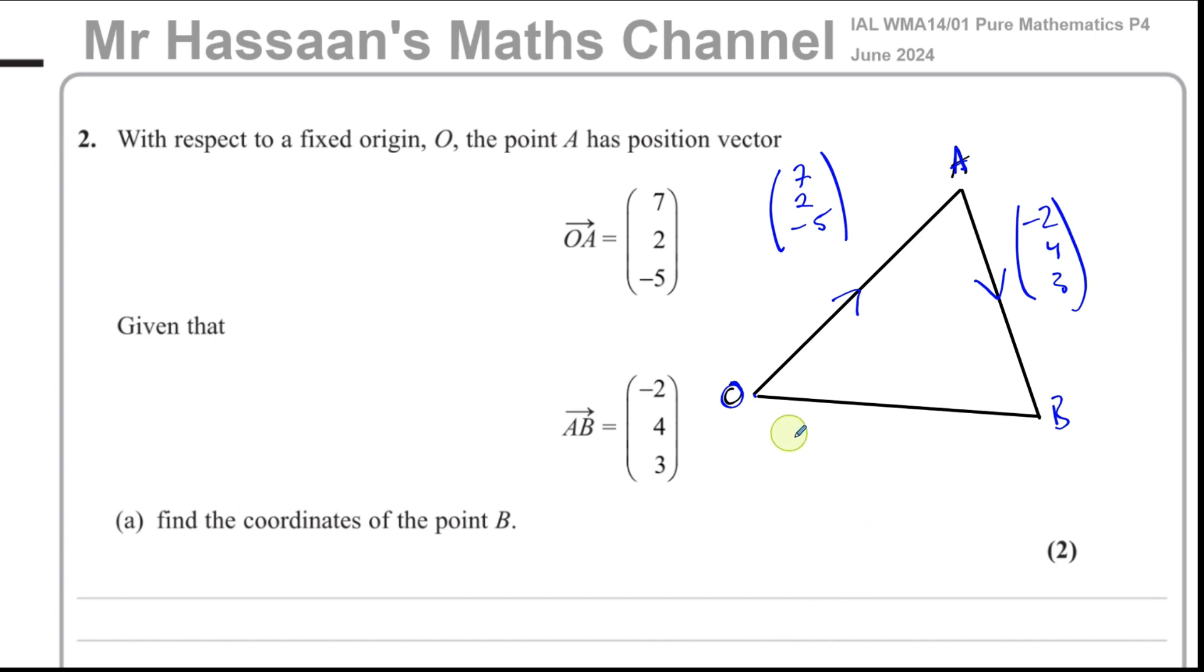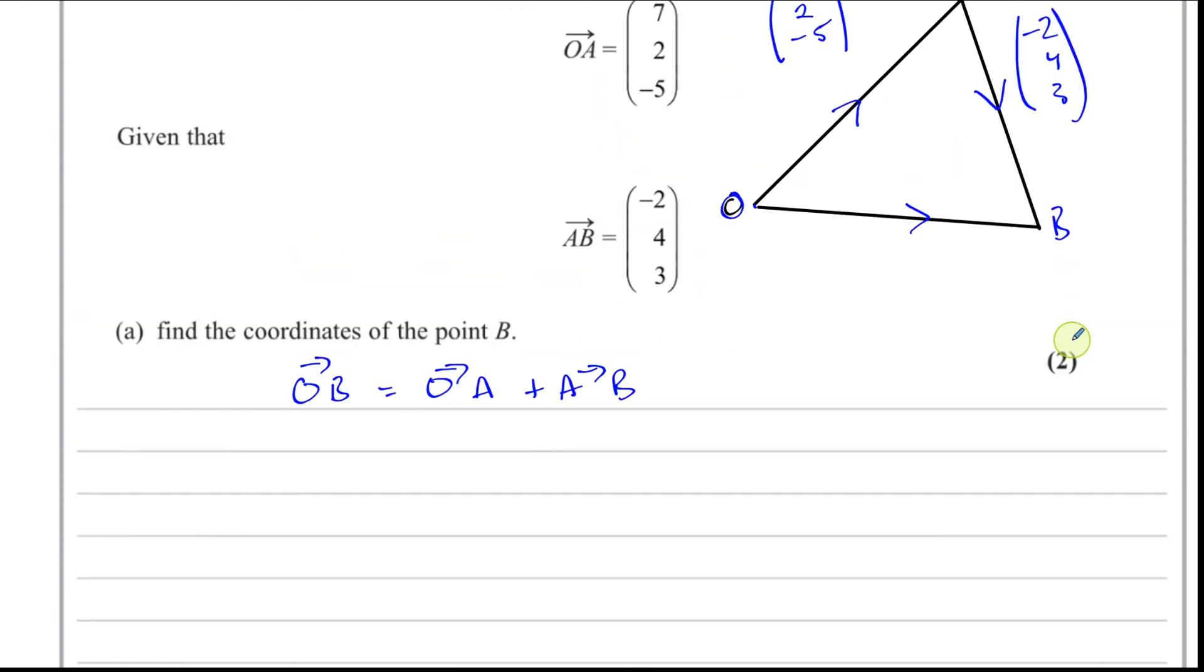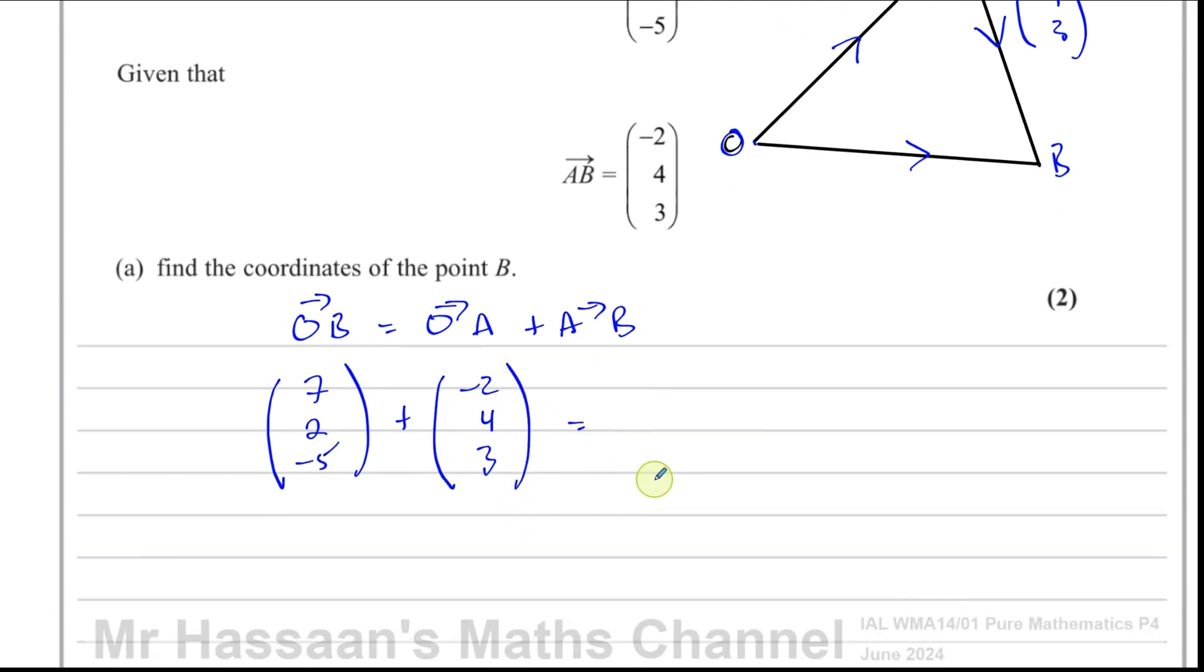We can see from here very easily. I want to go from O to B, so I want to go from O to A and then A to B. So I just have to simply add these two vectors together. OA plus AB takes us from O to B. So we have OB equals OA plus AB, which is 7, 2, negative 5 plus negative 2, 4, and 3.